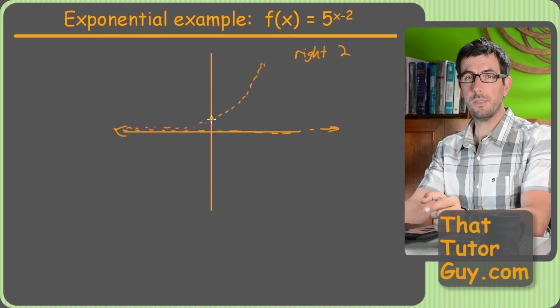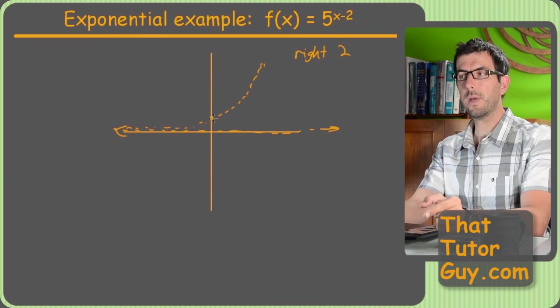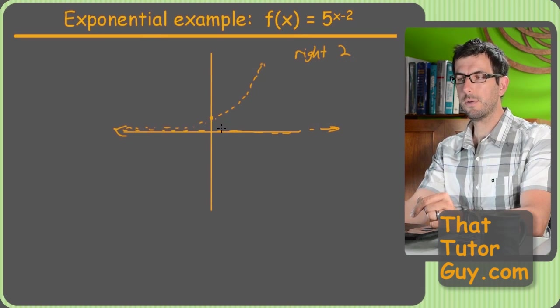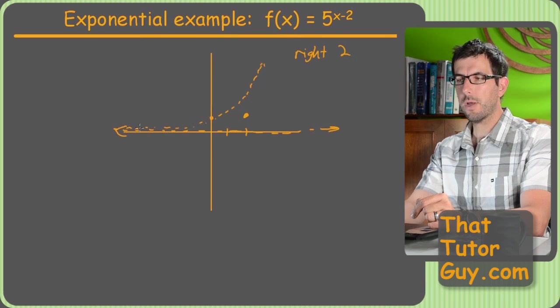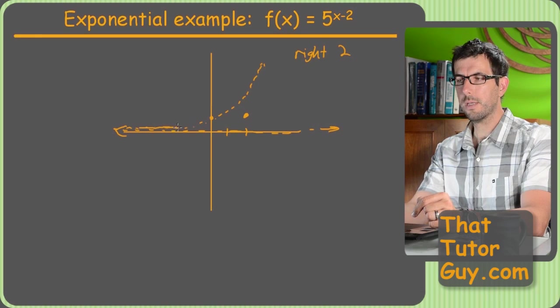But since I'm shifting right 2, that means my key point is also going to shift right 2. So now my key point's going to be right there. So once again, now I'm going to draw the function for real. But I'm just going to wait a little longer and come up through that key point.